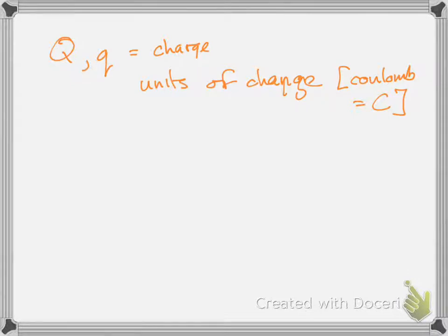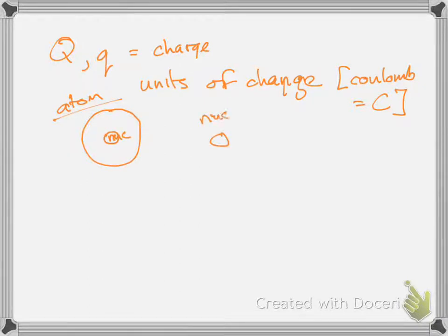There is a fundamental unit of charge — the charge of the electron or the proton. In an atom, you have the nucleus, and in the nucleus you typically have positive charges and neutral charges, called protons and neutrons. Around the nucleus you have electrons, denoted E-minus, where the minus indicates a negative charge.